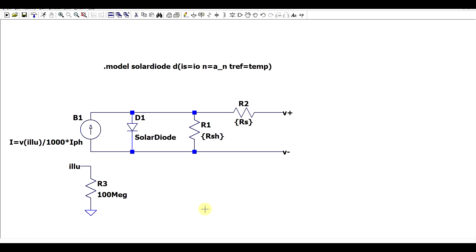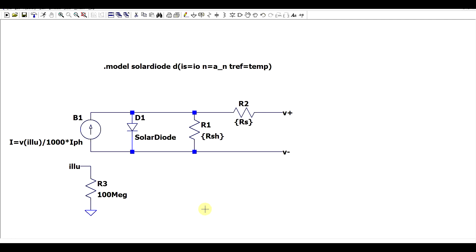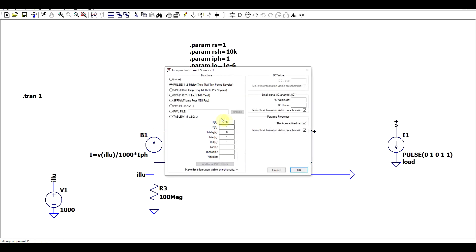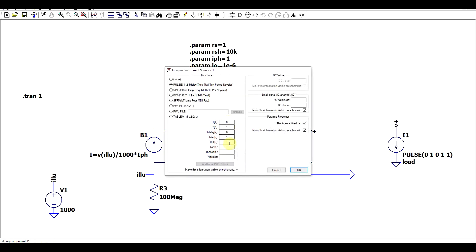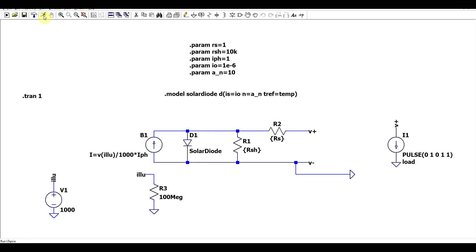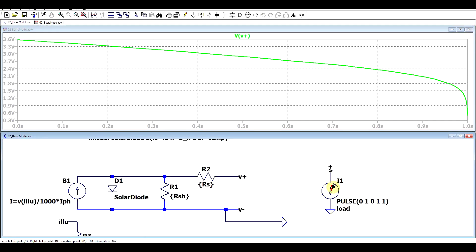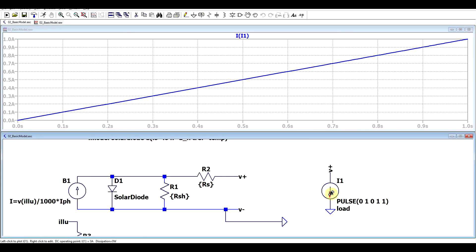And before moving forward let's just quickly test that the model actually works. So for that I prepared some values for the various parameters and our illumination is connected to a voltage source so thousand volts, thousand watts per square meter, and then to the output I've connected a pulse load. This will increase its load from zero amperes to one ampere in the time of one second.